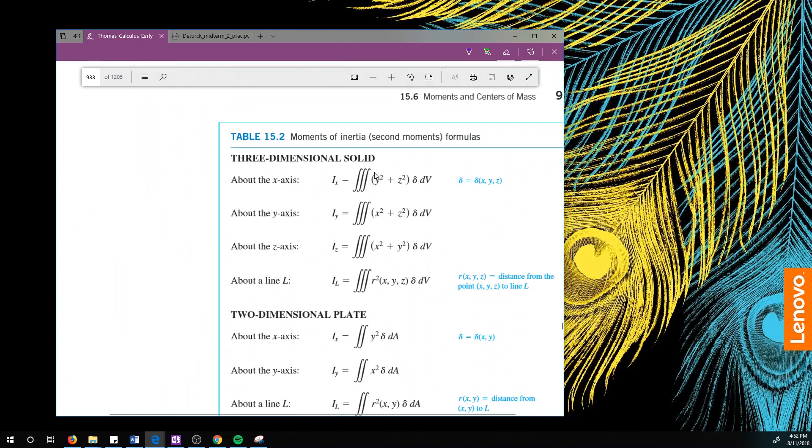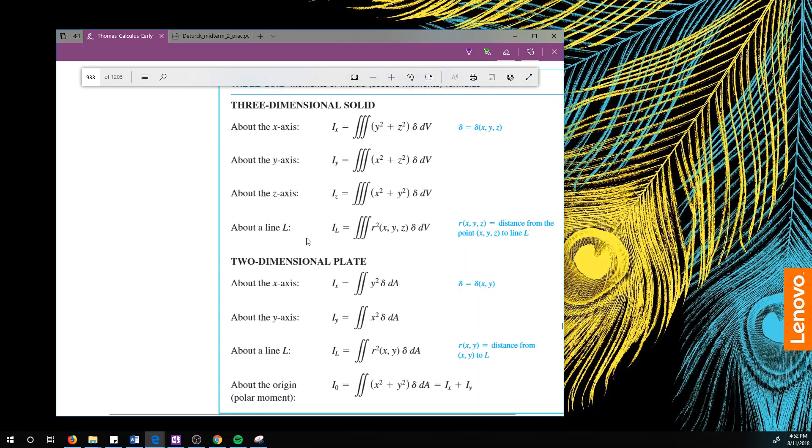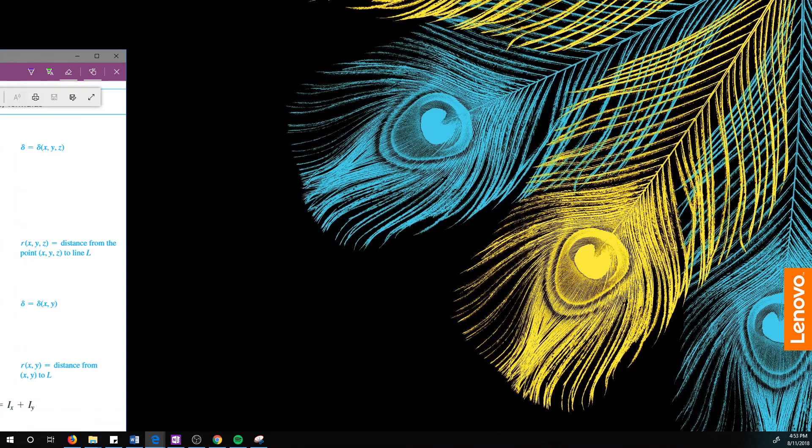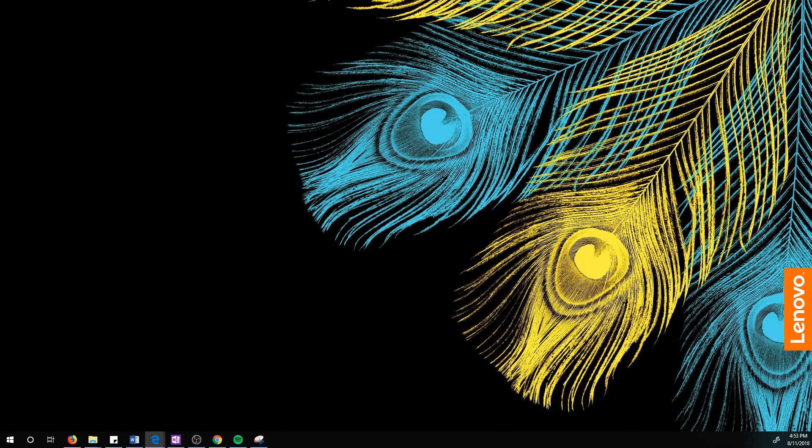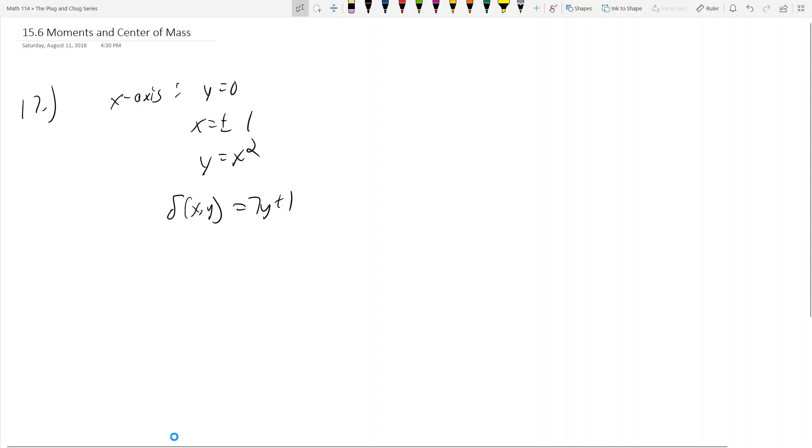And then you got table 15-2, which is some stuff about inertia. Look, no one's gonna test you on these formulas because they're just literally plug-and-chug. I guess the series is the plug-and-chug series, but these integrals get so tedious. Just look at this down here, right? You got x squared plus y squared times a density function, which God knows what they're gonna give you. And then you gotta integrate that. It's stupid. God, I'm so exasperated from having to redo this.